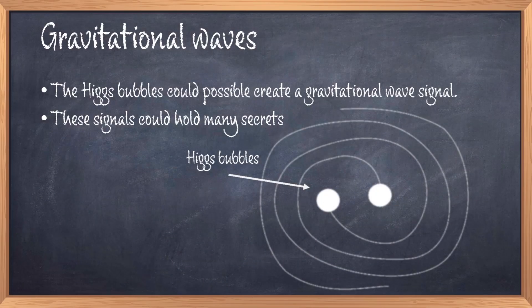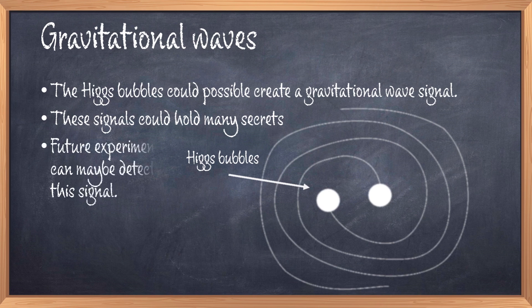And of course if this signal matches the signal predicted by the models we have discussed, then we can use it as evidence. But while the signal might be quite strong, it is not strong enough to be measured with current technologies. This is however not the end of the world, because technologies keep improving. And within the foreseeable future, a new space interferometer will be launched to measure gravitational waves much more sensitively. This is called the LISA experiment, and it could possibly detect signals produced by the physics of this theory we have discussed. But only time will tell.